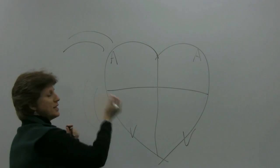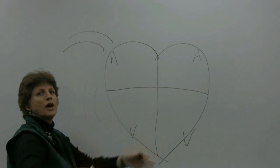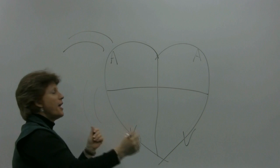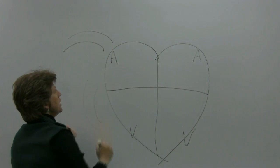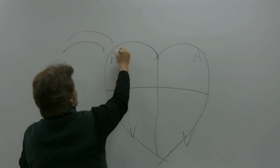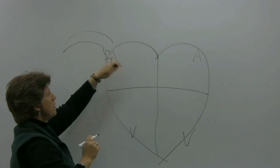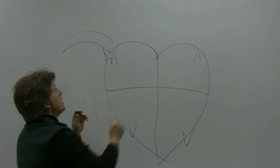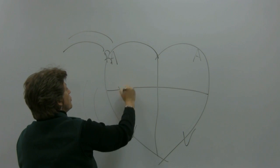You always want to start on the right side of the heart because the right side has unoxygenated blood. Blood comes to the right side of the heart from the whole body — the veins bring the unoxygenated blood up to the right atrium. So on the right side of the heart, the right atrium is where the unoxygenated blood enters.